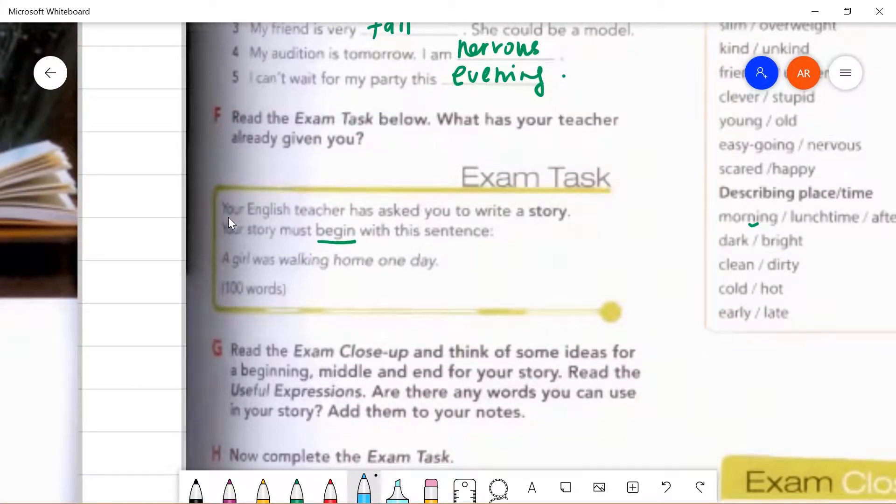Let's read the instruction together. Your English teacher has asked you to write a story. Your story must begin with this sentence. A girl was walking home one day. So how many words should you write your story? It should be around 100 words.